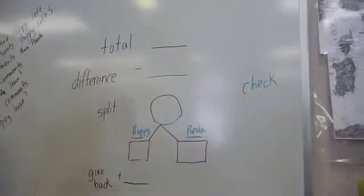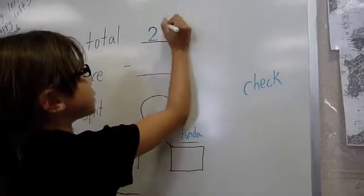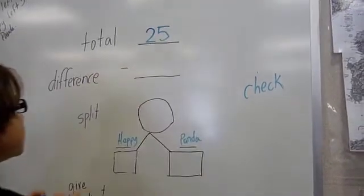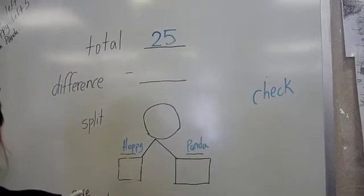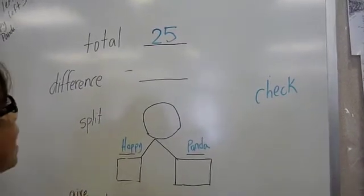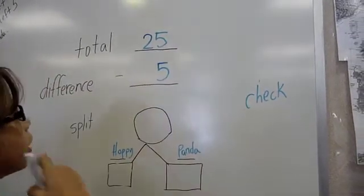First we write the total, which we all know is 25. And we're just going to take away the 5 that Hoppy has, and we'll give it back to him later.